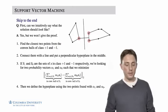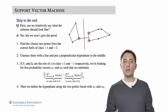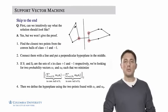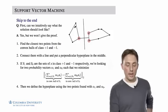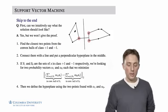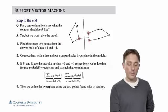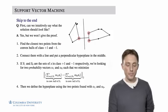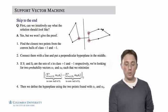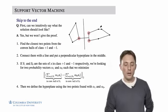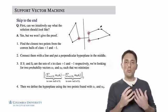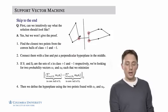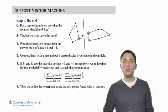So intuitively, what we can think of as going on is we can take the data in both of the classes and construct their respective convex hulls. So all of the data in class one will define a convex hull like this. So this is the same data set that we've been looking at on the previous slides. And all of the data in class minus one would define this convex hull.